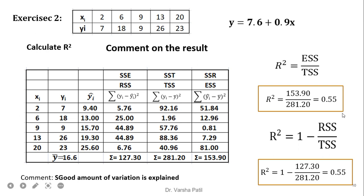Here we are getting the value between 0.50 to 0.75. So a good amount of variation is explained by R-square.